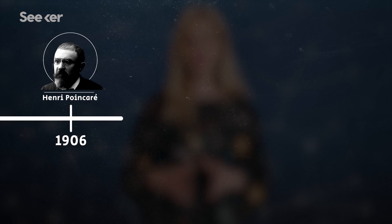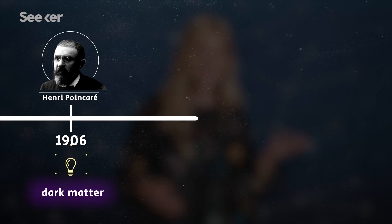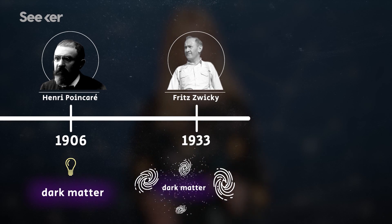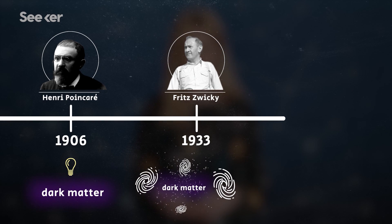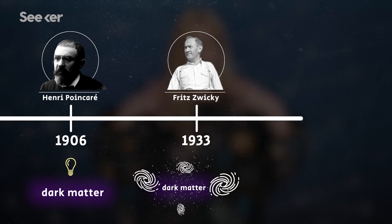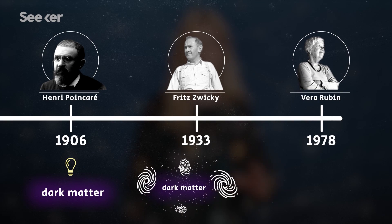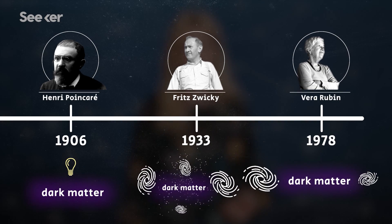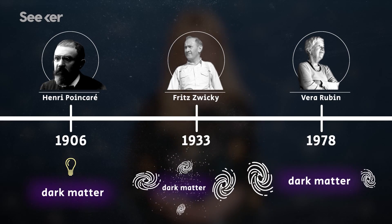The idea of dark matter was first proposed by Henri Poincaré in 1906. Then in 1933, evidence of dark matter was found by Fritz Zwicky while studying galaxy clusters. And then more evidence of dark matter was found based on the calculations of rotational velocities in galaxies made by Vera Rubin in 1978.